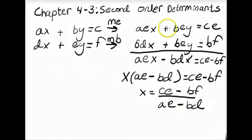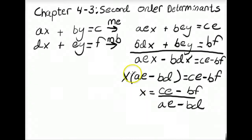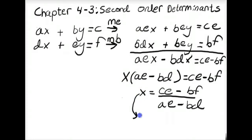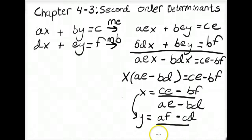We use that formula to evaluate X. If we had chosen to evaluate Y and eliminated X instead, the derivation follows the same steps. Y is going to end up being (AF minus CD) over (AE minus BD).